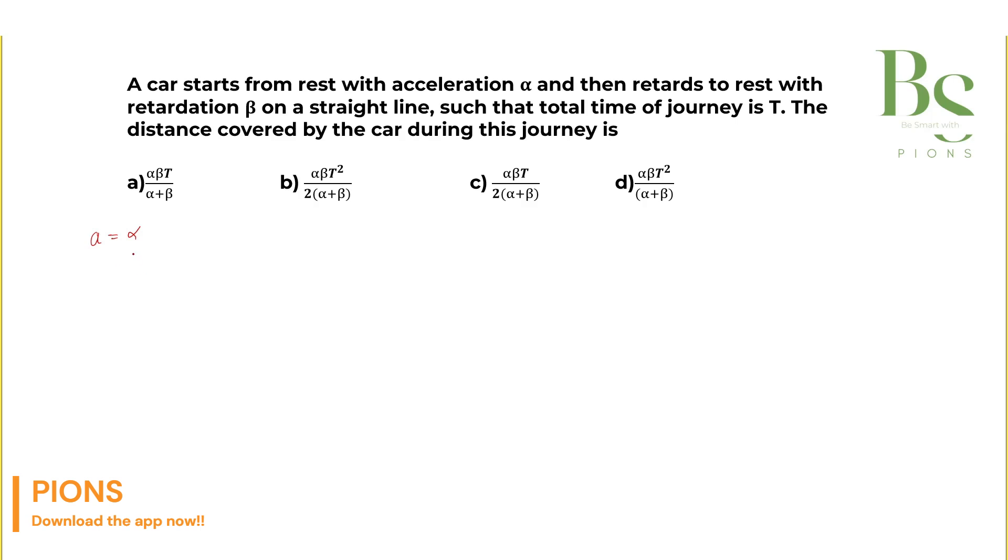So if the car is starting from rest, initial velocity is zero. Let's figure out what is the maximum velocity it goes before it goes into retardation. So V_max will be how much? Let's call V final as V_max, maximum velocity. Using the equation of motion, V equals U plus A T. So V is V_max and that equals zero plus alpha times T1, because we don't know for what time it has gone into acceleration.